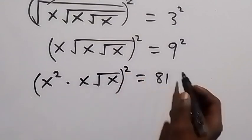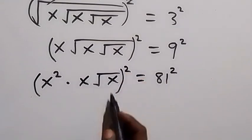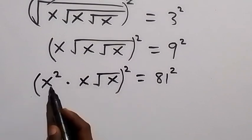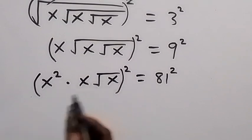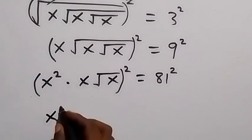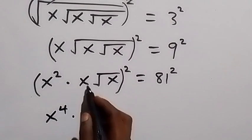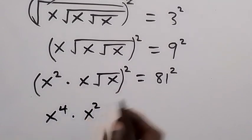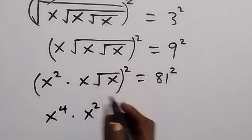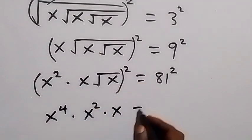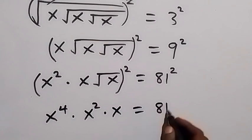Then we square again — this side and also this side. This square affects these three terms: x squared, x, and root x. When we square x squared that will be x to the power 4, then times x squared, that will be x squared, then this square cancels the square root, leaving x, equals to 81 squared.